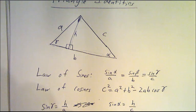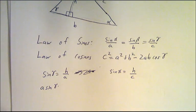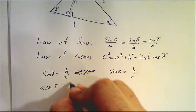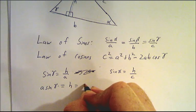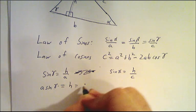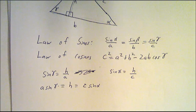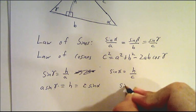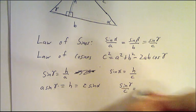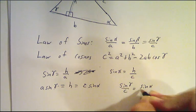So we have that A sin alpha is equal to H, which is A sin gamma is H, which is C sin alpha. So if we divide both sides of this equation by AC, we get that the sin of gamma divided by C is the sin of alpha divided by A.